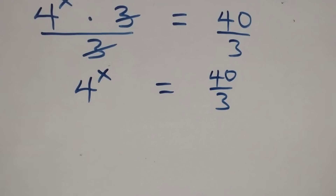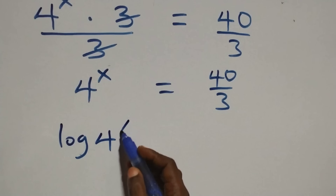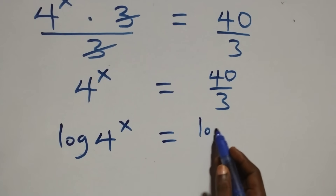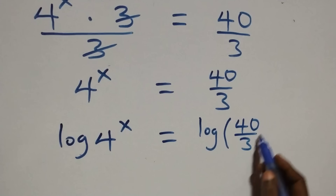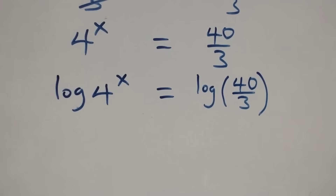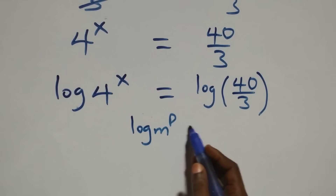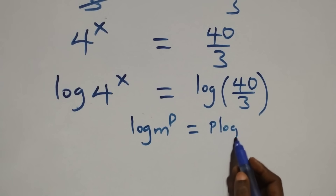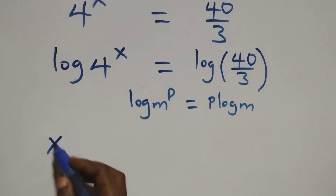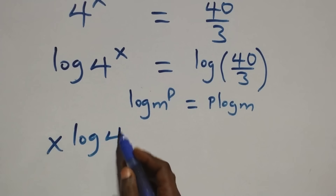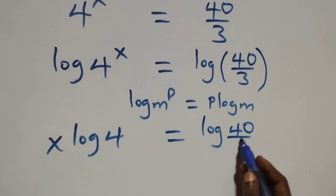The next step here, we take the log on both sides. Here we have log 4 raised to power x equals to log 40 over 3. The next step here, we apply the power rule of logarithm. When we have log m raised to power p, it is the same thing as p log m. So all we have here becomes x log 4 equals to log 40 over 3.